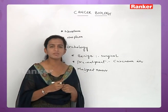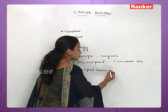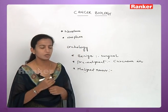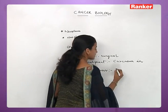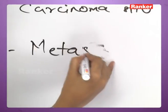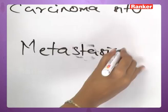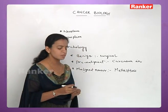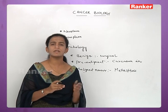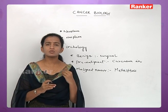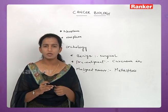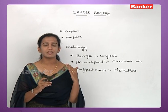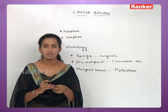Malignant tumors are dangerous — they spread all over the body. This process of spreading is called metastasis. With malignant tumors, there is no surgical method available because the cancer spreads from one part to another throughout the entire body.